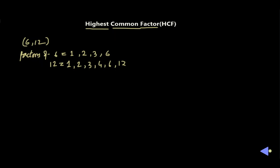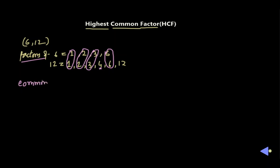We now have the factors of both numbers. We can see that 1 is common — it is a factor of both 6 and 12. Also, 2 is a common factor, and 3 is a common factor. However, 4 is not a common factor since it is not present in the factors of 6. And 6 is also a common factor. So the common factors of 6 and 12 are: 1, 2, 3, and 6.